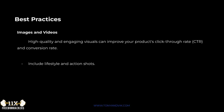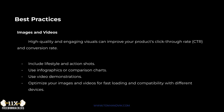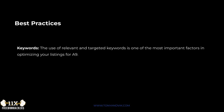Images and videos are an essential part of optimization. Having high-quality, engaging visuals improves click-through rate and conversion rate. This includes lifestyle and action shots, infographics, comparison charts, video demonstrations, and optimizing images and videos for fast loading and compatibility with different devices.